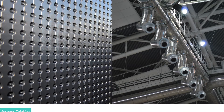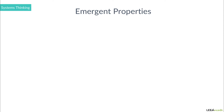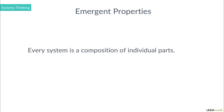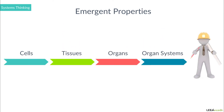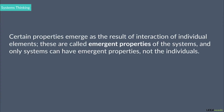Understanding the emergent properties of systems is also essential in order to better evaluate why we need to form systems. Every system is a composition of its individual parts. Let us take the human body as an example, in which cells form tissues, tissues form organs, organs form the organ systems, and organ systems form humans. A lung is made up of cells, however, having only lung cells together will not do anything. The whole system needs to be there.